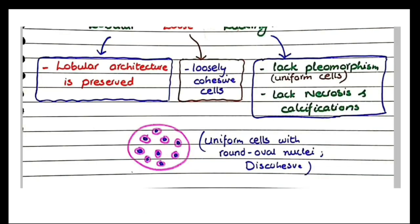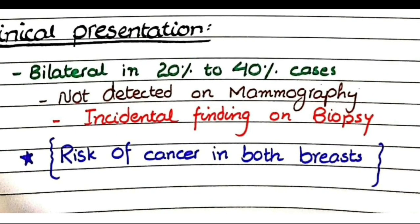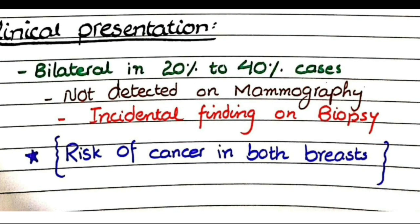The clinical problem with lobular carcinoma in situ is that it is not detected on screening mammography, making it hard to detect and therefore more dangerous. These tumors are usually diagnosed only when they metastasize or become advanced, and are often incidental findings on biopsy. A second important point is that lobular carcinoma in situ is bilateral in 20 to 40 percent of cases, meaning if detected in one breast there is a 20–40% chance the other breast is also involved.